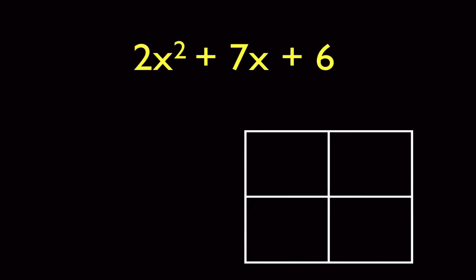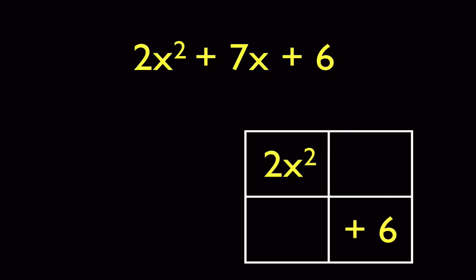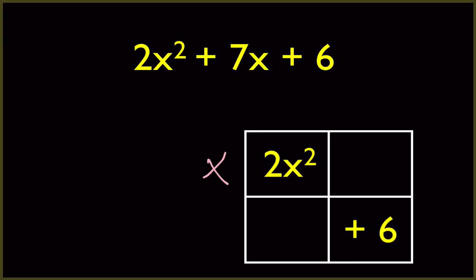First off, we're going to start with the rectangle like we have before. The first thing we have automatically when we do a problem like this is we can go ahead and fill in the x squared term and the constant term. Every time we do one of these rectangles, we always leave our x's in these two places, so the x's are going to be on the outside. Because of that, we always end up with an x squared. Obviously on this problem, either this one or this one has got to be a two, but not both.